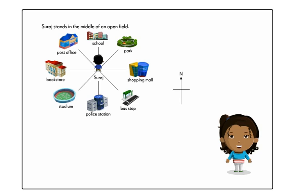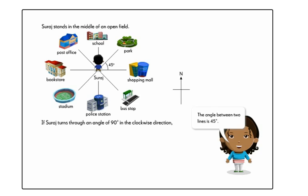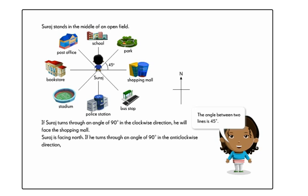Let's look at the picture again. The angle between two lines is 45 degrees. If Suraj turns through an angle of 90 degrees in the clockwise direction, he will face the shopping mall. Suraj is facing North — if he turns through an angle of 90 degrees in the anticlockwise direction, he will face the bookstore.